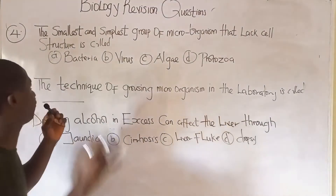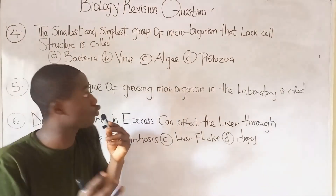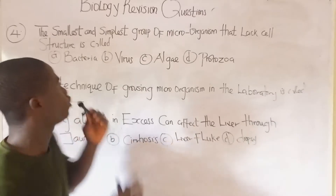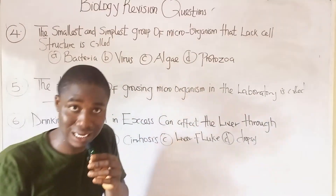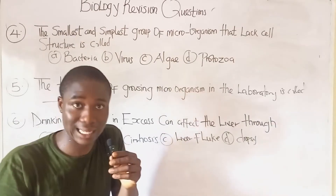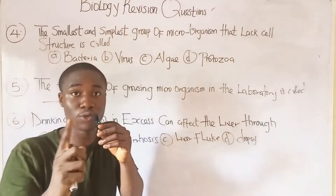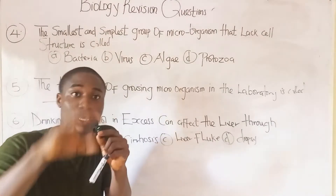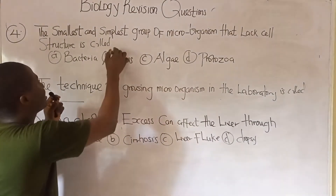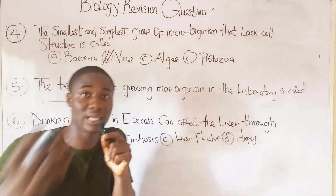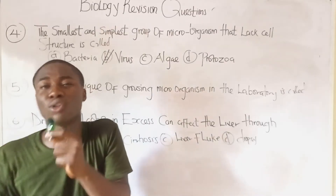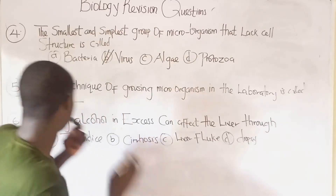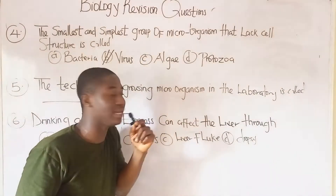Question four asks: what is the smallest and simplest group of microorganisms that lacks cell structure? All these options are microorganisms — too small to be seen with the naked eye and viewed using a microscope. The answer is the virus, because viruses can be living or non-living depending on their environment, and they lack cell structure.